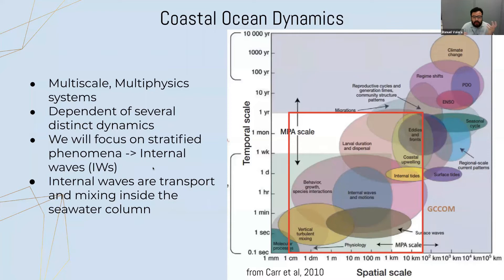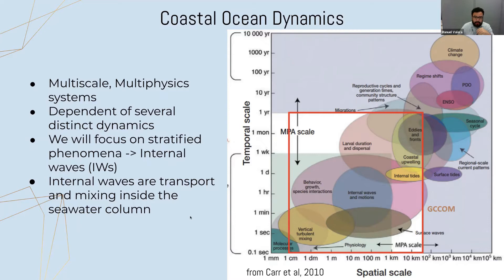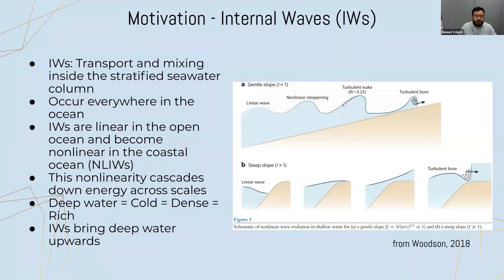We will focus today on internal waves, which are a kind of stratified phenomena. The ocean is naturally stratified because of differences in temperature and density, and that stratification gives rise to internal waves. Internal waves are basically the same as surface waves, but occurring at the interfaces of the different stratified layers. With continuous stratification as in the ocean, internal waves move throughout the entire water column, providing transport and mixing within the seawater.